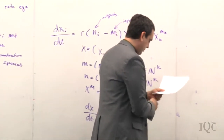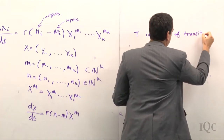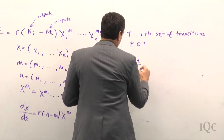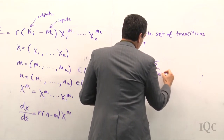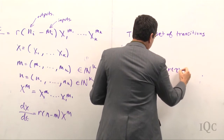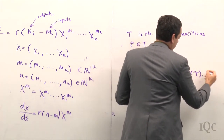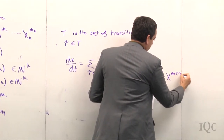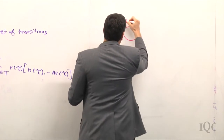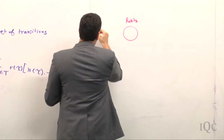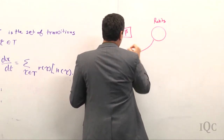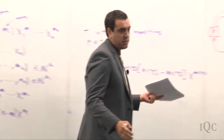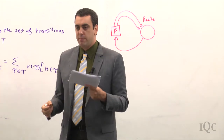To summarize: let T be the set of transitions, with τ ∈ T one transition. Then dx/dt equals a summation over τ in T of r(τ) times (n(τ) − m(τ)) times x^{m(τ)}, the concentration of the inputs raised to the input stoichiometry. As an example, for rabbits with transition rate β — one rabbit in, two rabbits out — this models birth. Even though real rabbits don't reproduce asexually, this model gives good predictions for rabbit populations in the mean field.